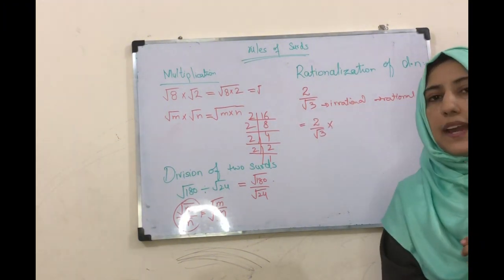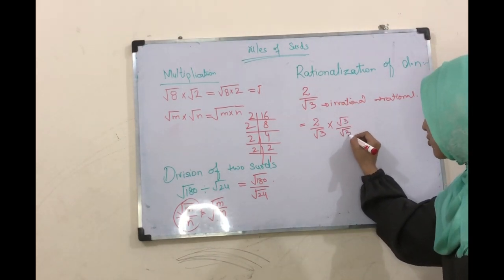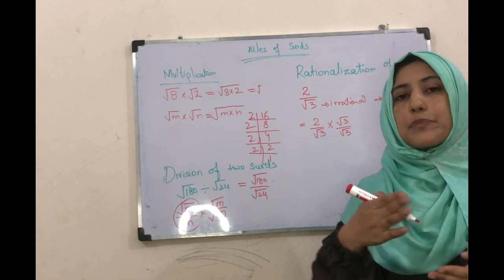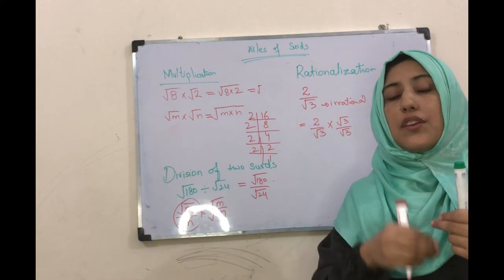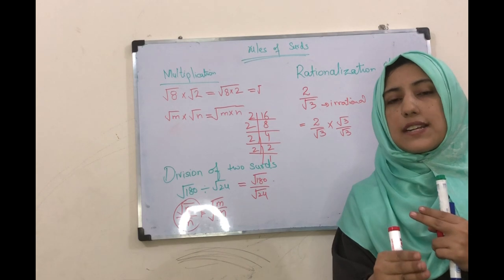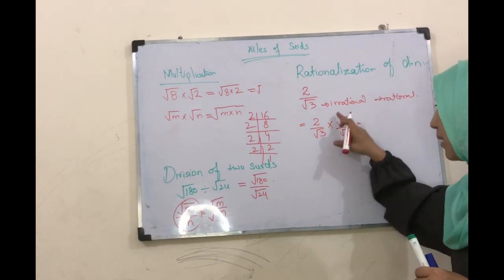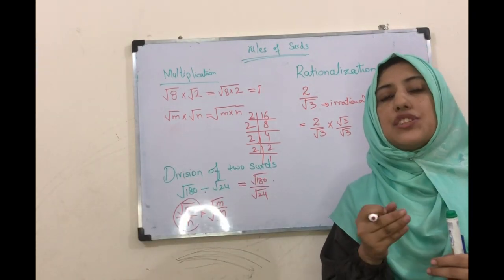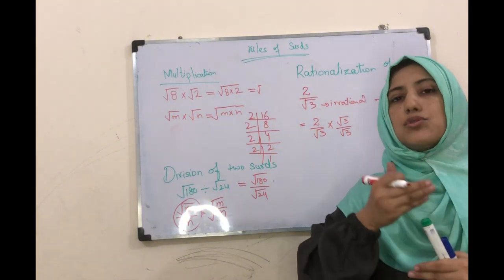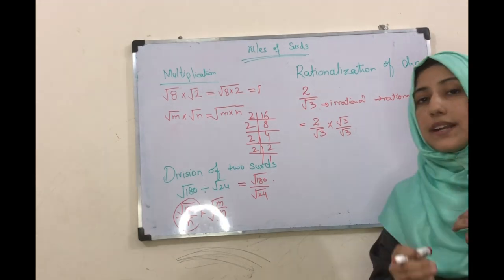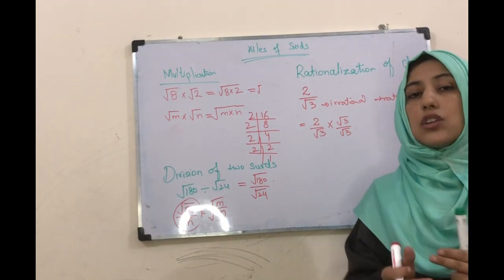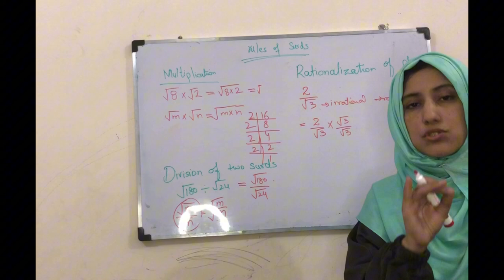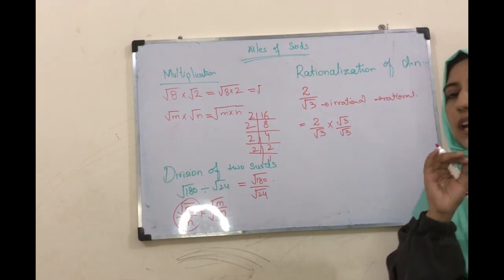Rational میں ہم اس کو کیسے change کریں گے؟ اس کو multiply کریں گے √3 سے - یعنی √3 سے۔ جب بھی آپ کے پاس denominator میں irrational factor ہے تو آپ اس کو rational factor سے multiply کریں گے۔ یہ ہمارے پاس rational factor ہے۔ یعنی اگر ہمارے پاس denominator میں irrational number ہے تو ہم اس کو rational بنانے کے لیے denominator سے ہی multiply اور divide کریں گے، تو ہمارے پاس جو denominator ہے وہ rational میں change ہو جائے گا۔